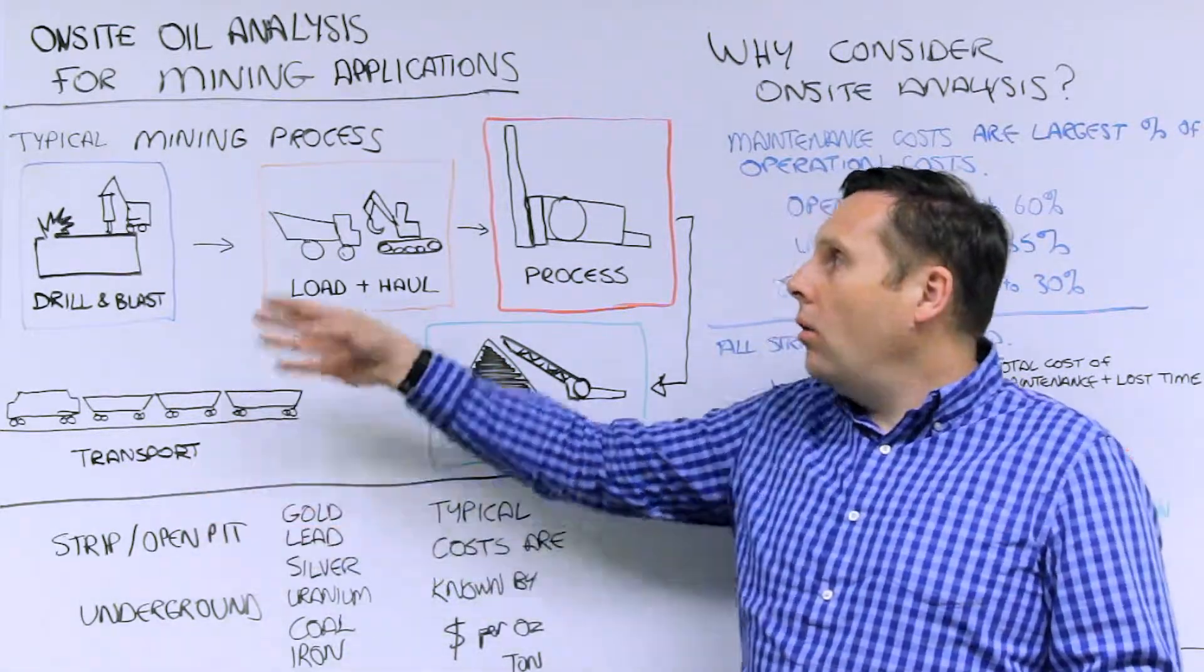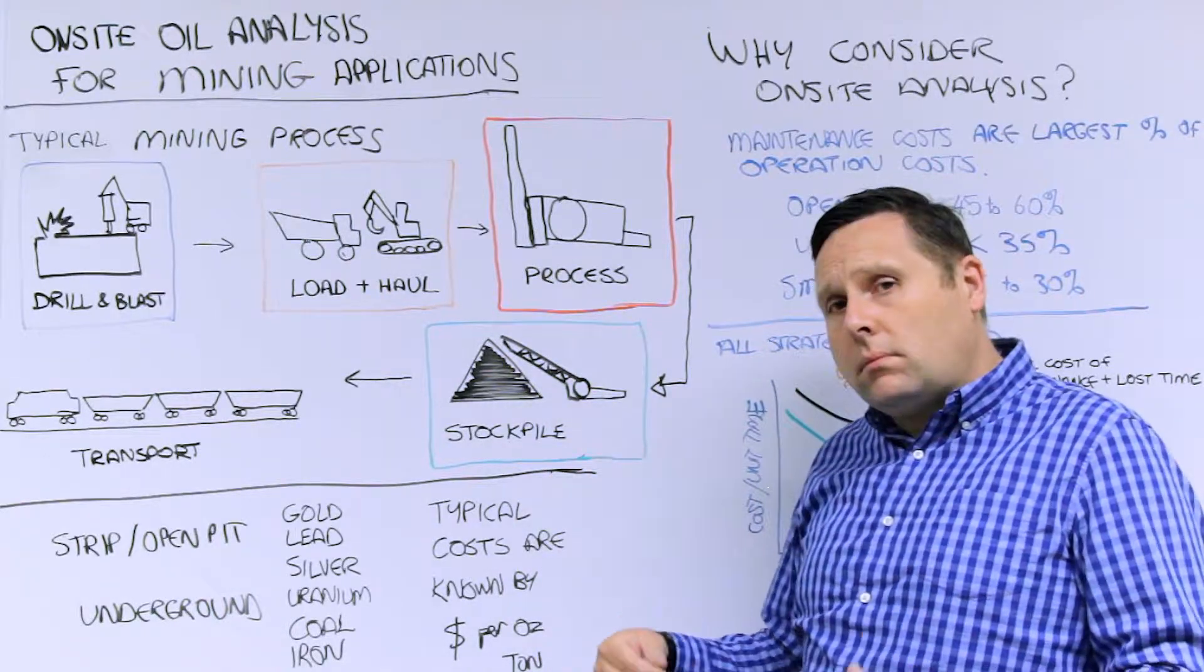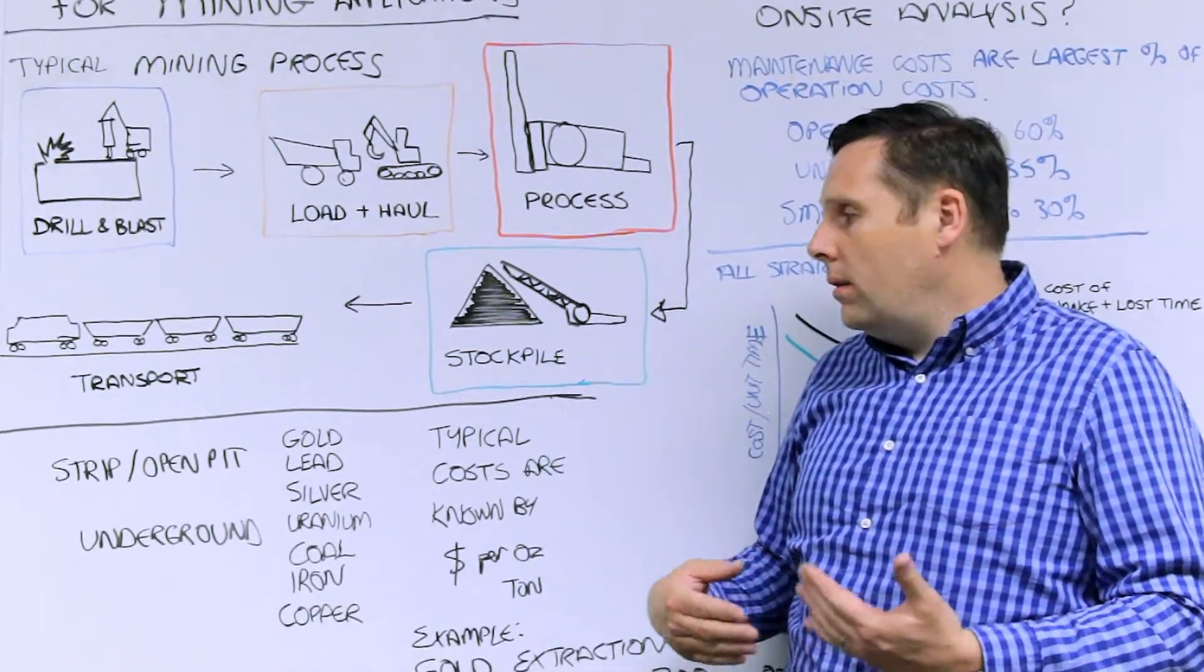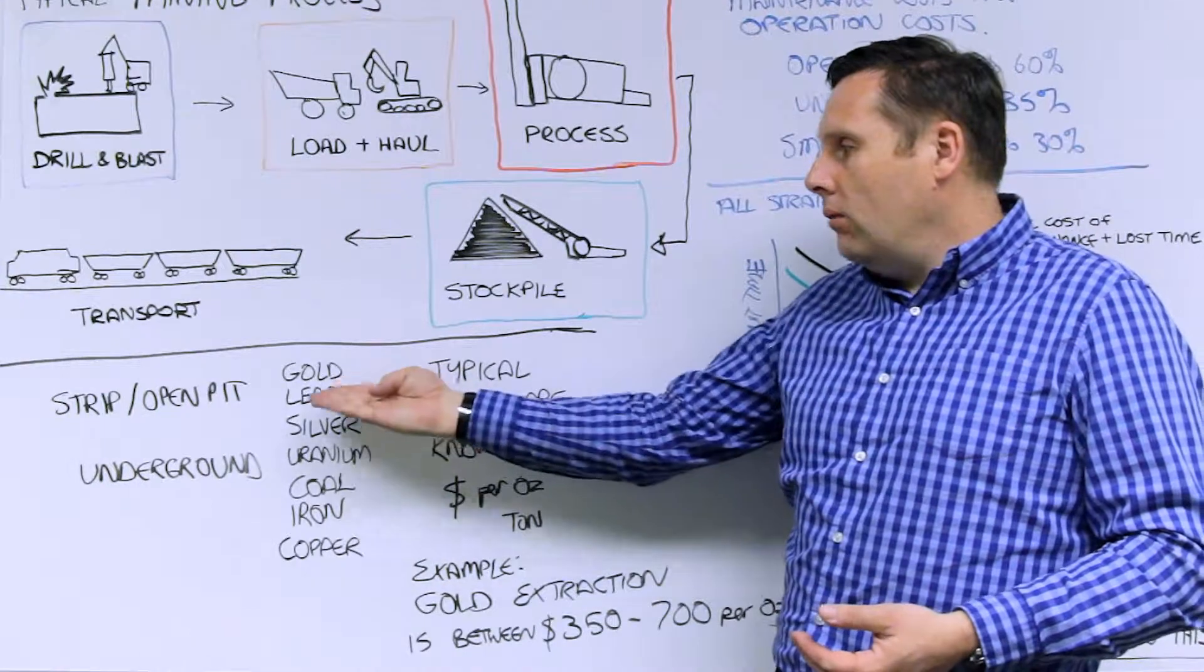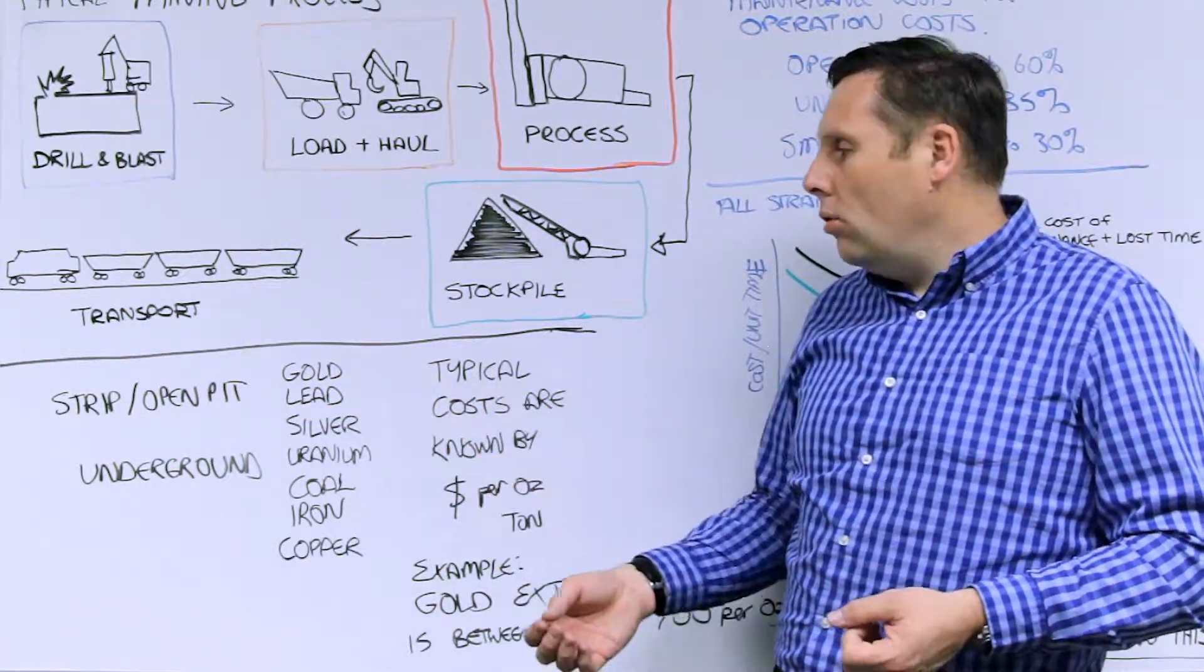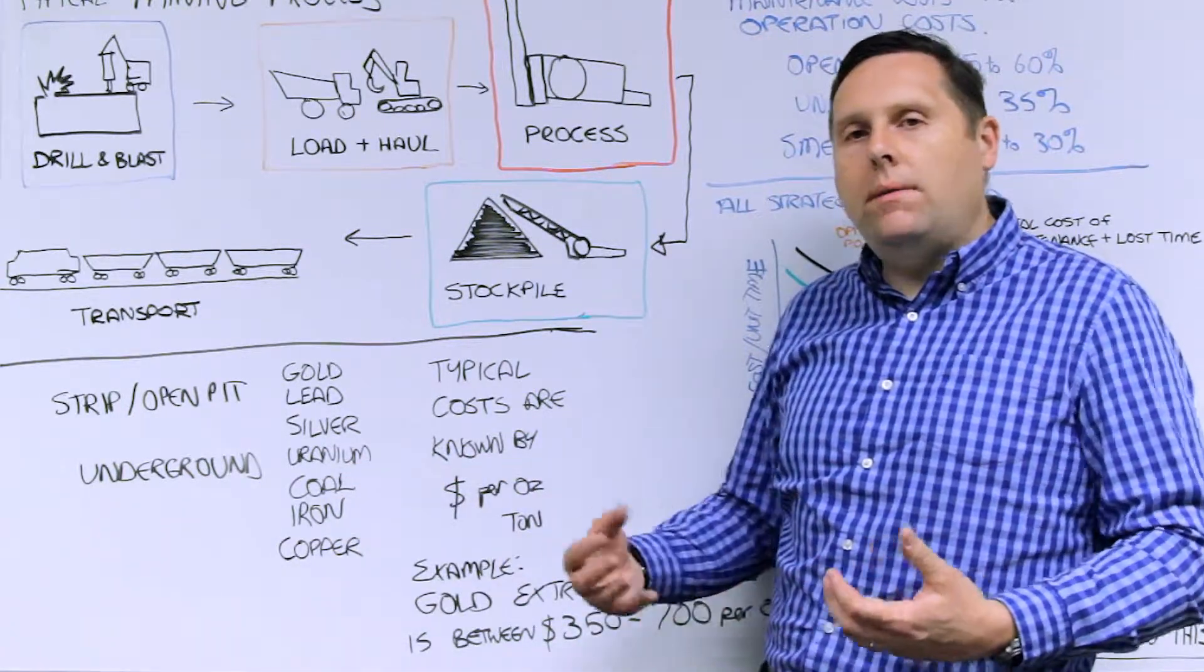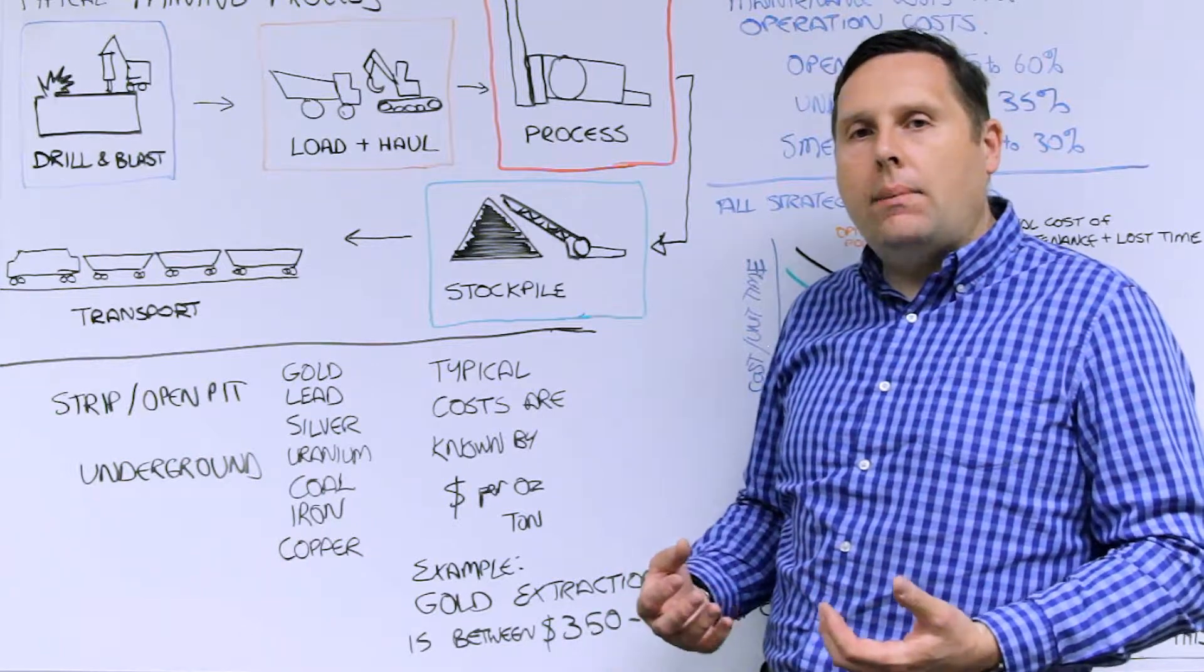So almost all mining processes have five distinct areas. In the world of mining, there's different types of mining. It ranges from strip or open pit mining that's common for some of the major ores. You also can have underground mining, which is also common in different areas of the world depending on the application.